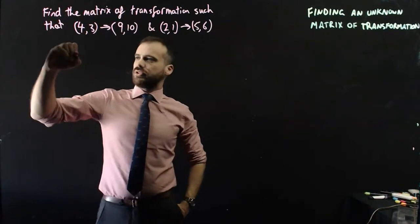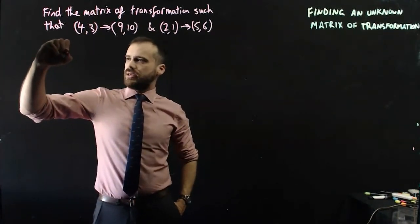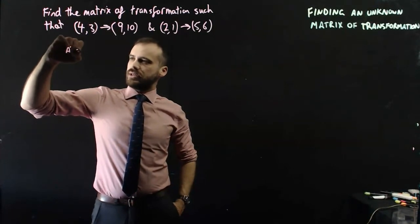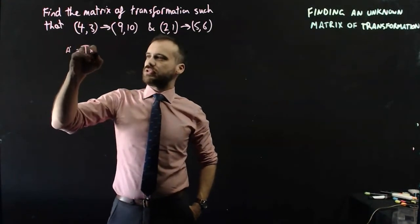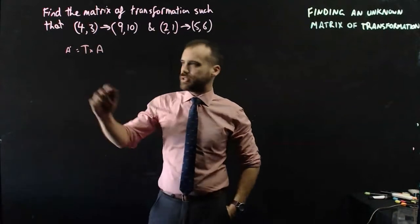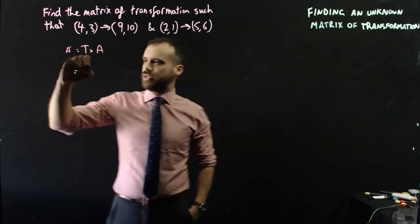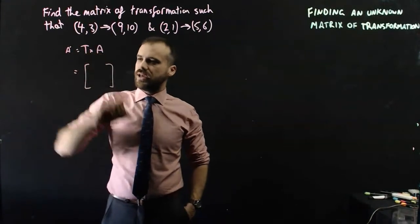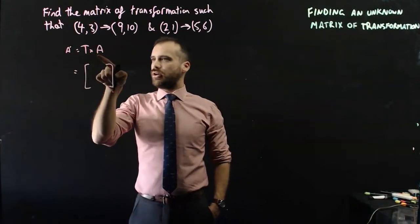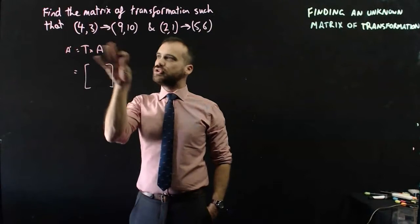We can use our general rule here, which says that the image matrix is equal to the transform matrix times the object matrix. So, the transformation matrix, that's what I'm trying to find. We can just leave that there for now. Now, the object.